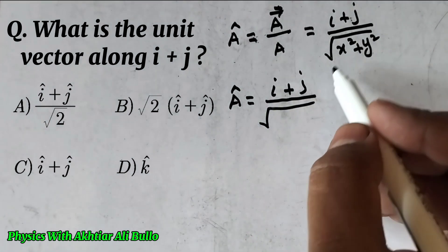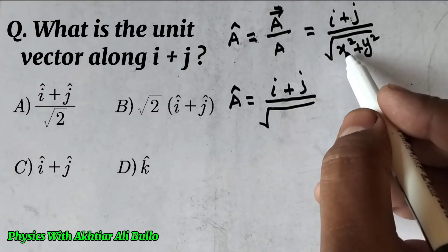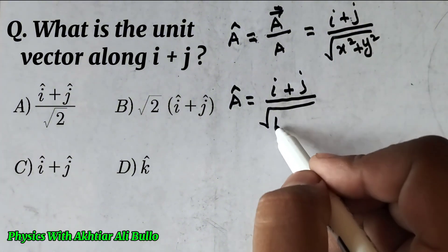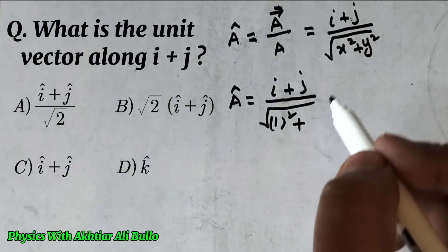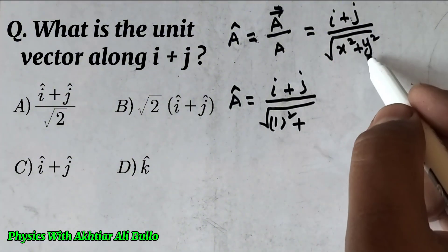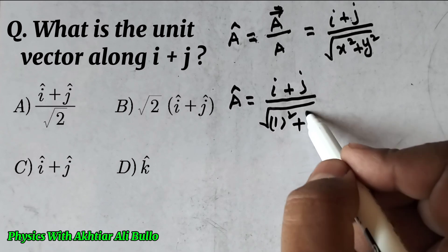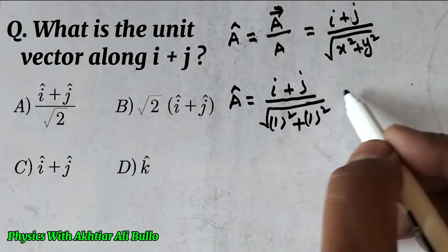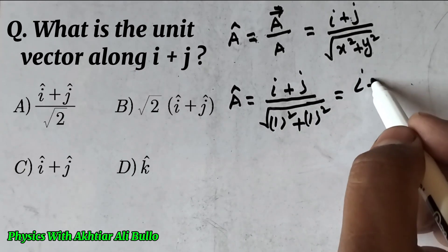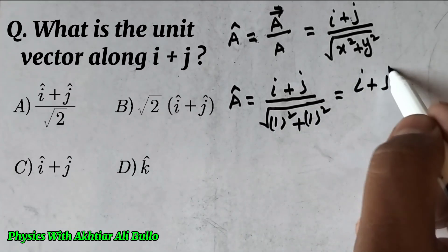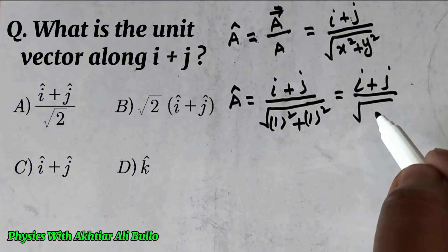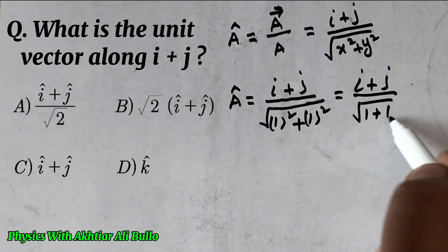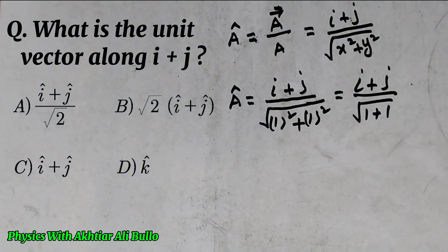The value of x is 1, so we have 1 squared, and the value of y is also 1, so we have 1 squared. That gives us i plus j divided by under root of 1 squared plus 1 squared, which is 1 plus 1.